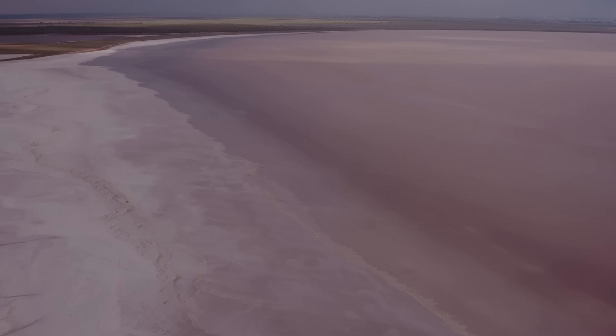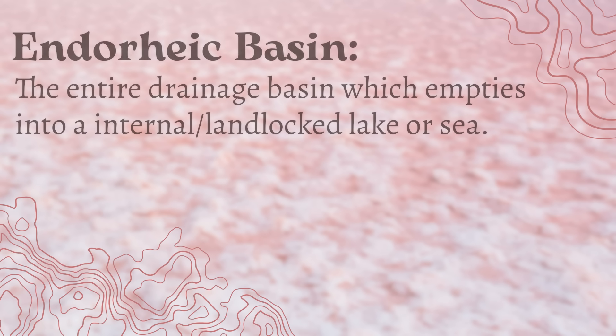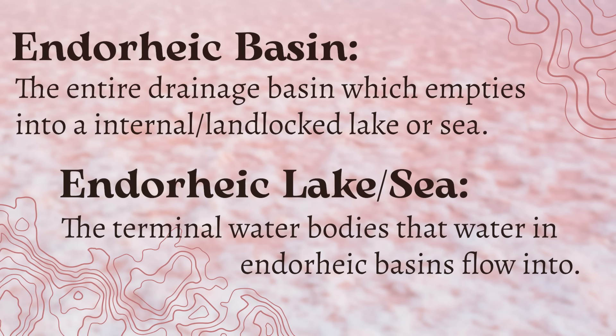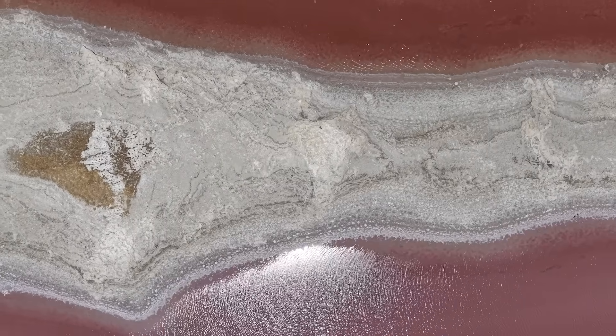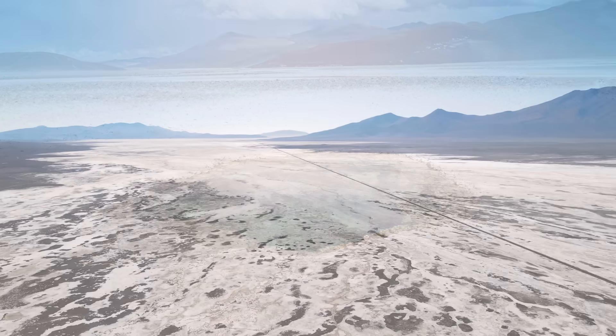Water within these regions will never reach the ocean. Instead, water flows into an inland basin or depression where it accumulates. Endorheic basin refers to the entire drainage basin, and endorheic lake or sea refers to the terminal water bodies within these basins. Without an outflow, most water loss is due to evaporation, and to a lesser extent, seepage. Endorheic lakes are often salty because water evaporates but minerals don't. Over time, salts and minerals accumulate and concentrate in the water. Endorheic lakes with freshwater usually have higher levels of groundwater seepage, drawing minerals out of the lake.